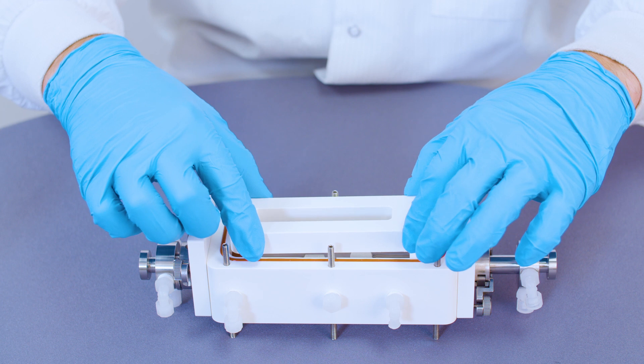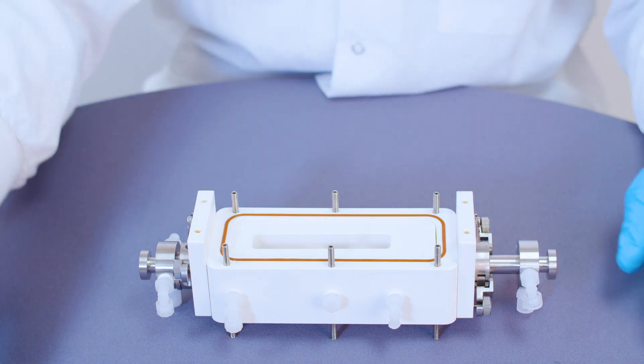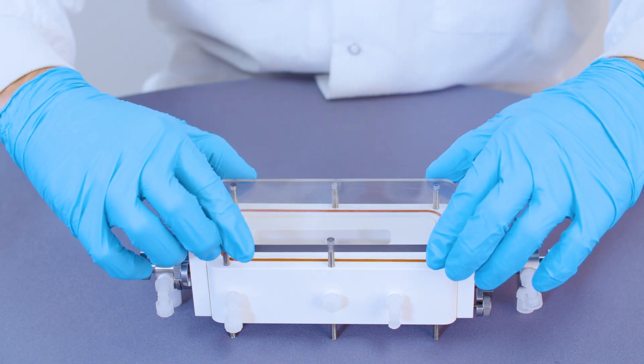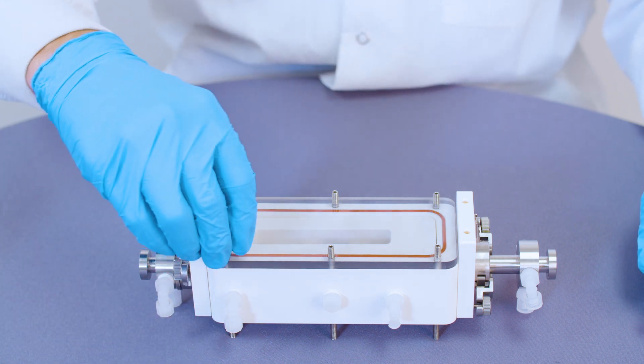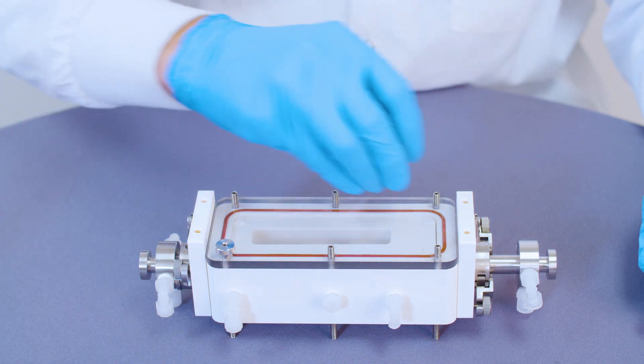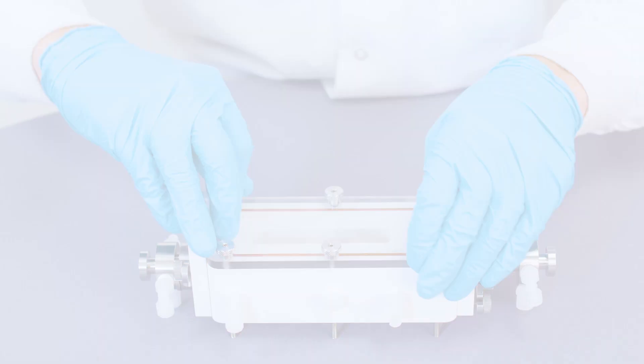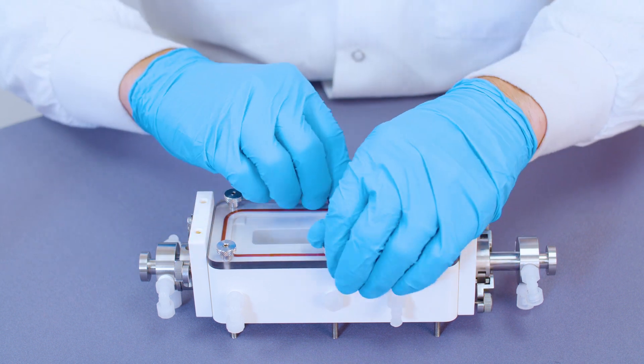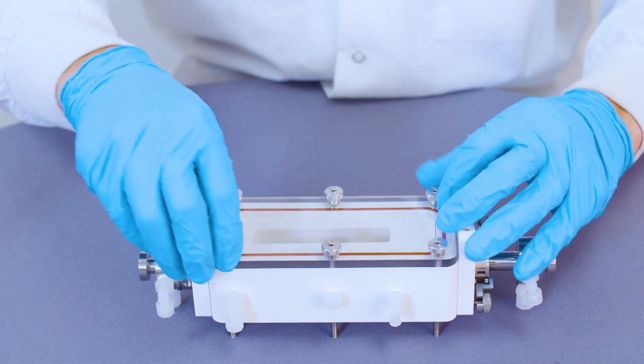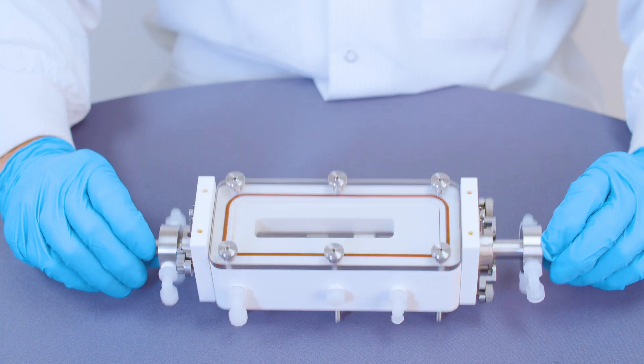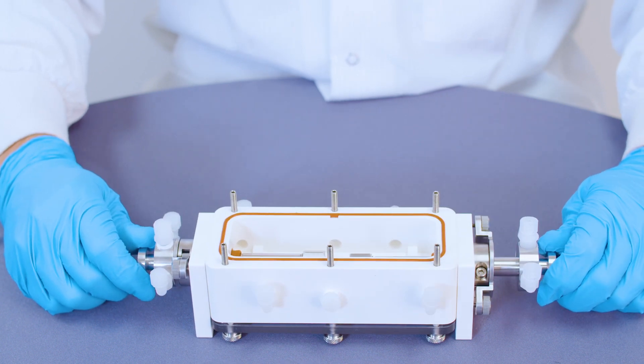To reduce the internal volume of the chamber, you may choose to use the volume reducing blocks. Start by inserting this optional volume reducing block in the back, followed by placing the cleared door and securing it by tightening the thumb screws. The front block will be added at a later step.